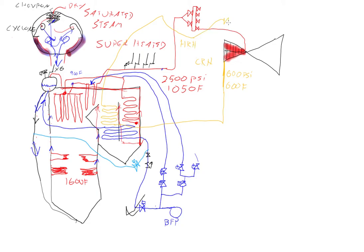Then we go through the intercept valves which are similar to the main steam stop valves, they're spring to shut, hydraulic open. Now we are at say 590 psi because whenever you travel down a tube you lose pressure from resistance, but we are at 1,050 Fahrenheit again.